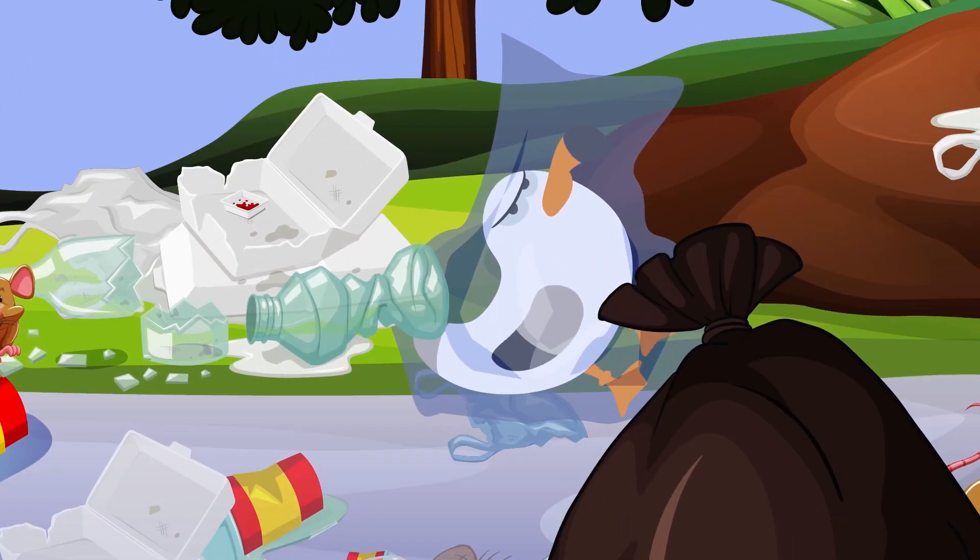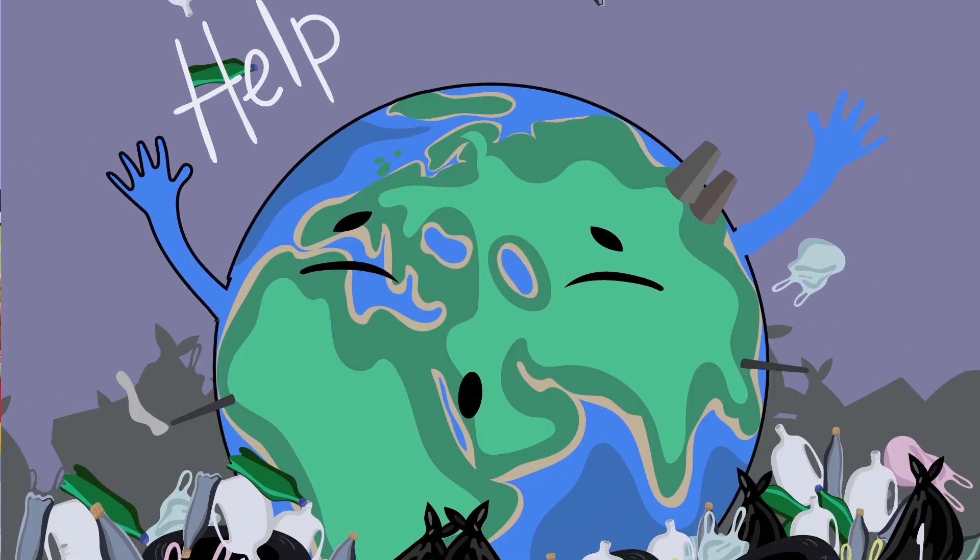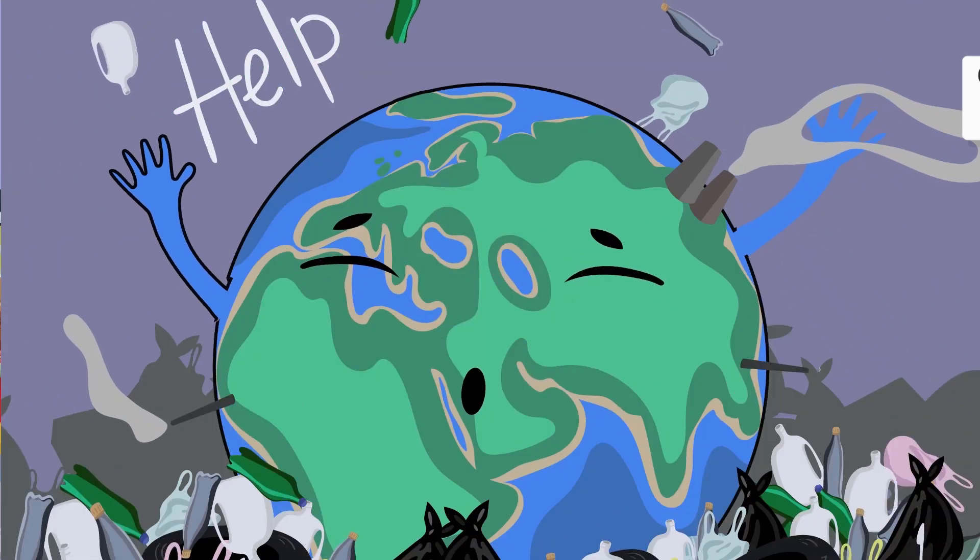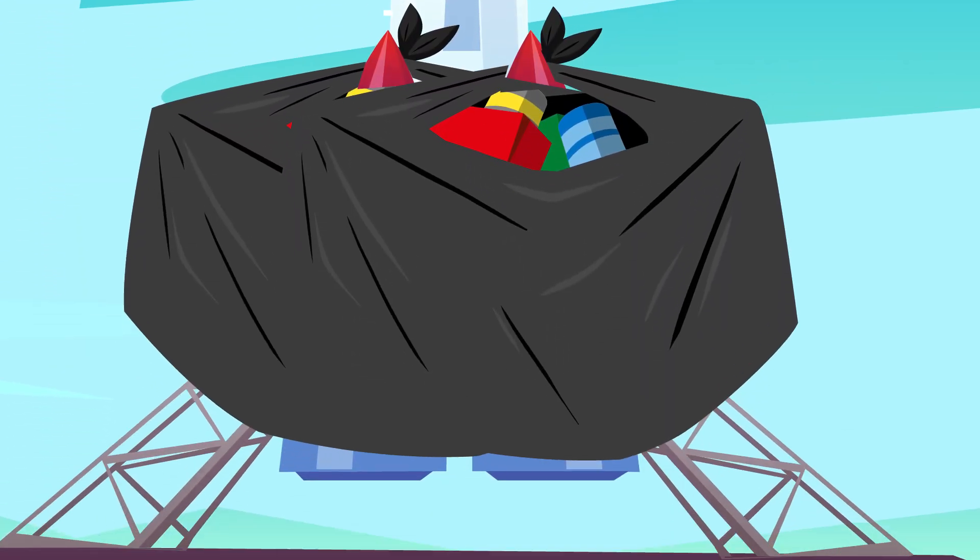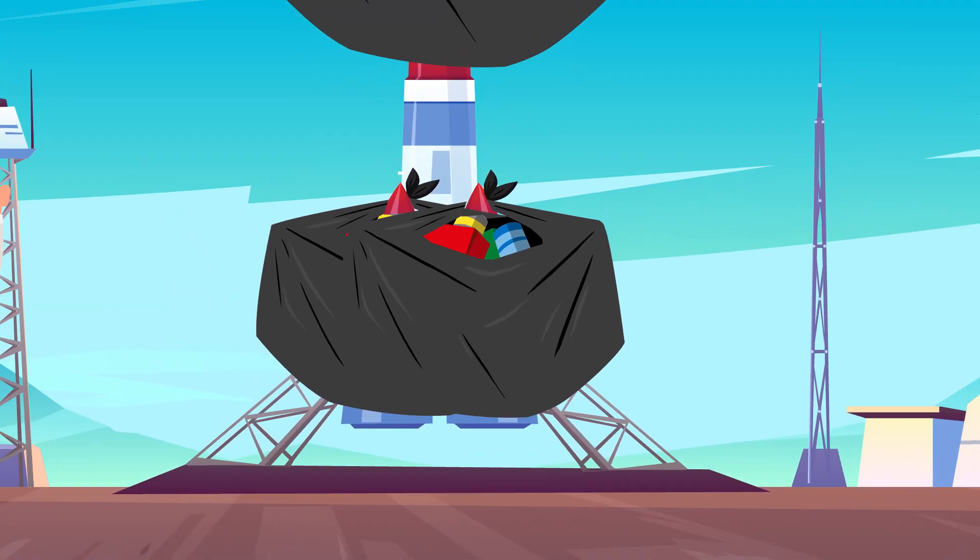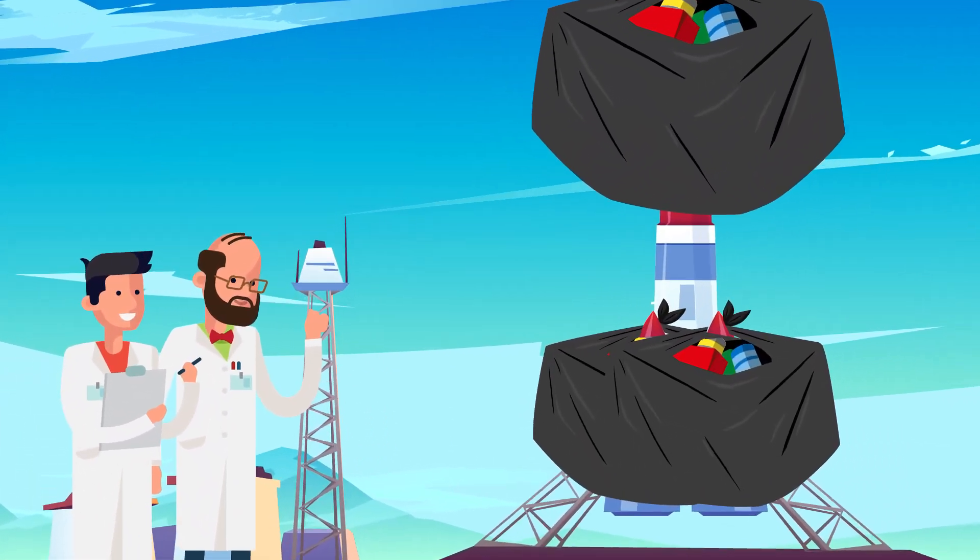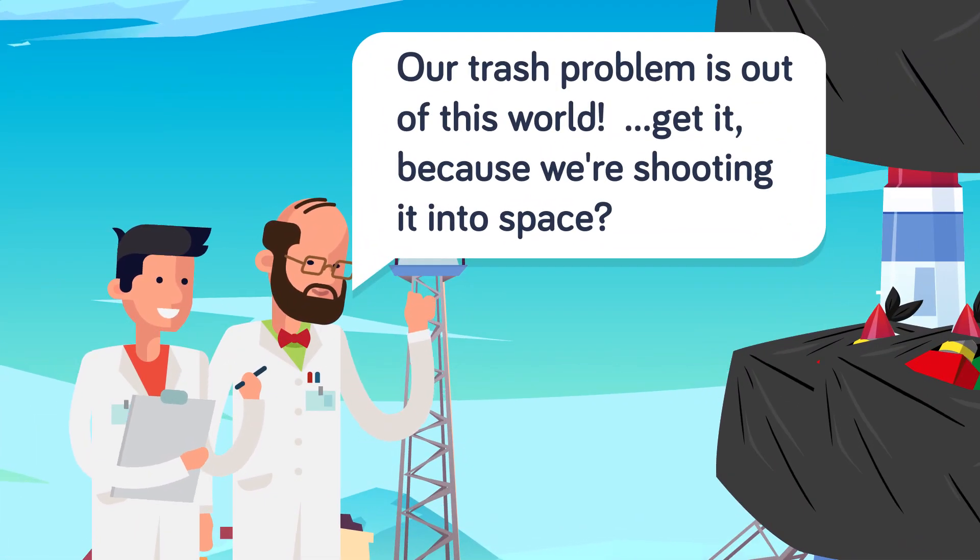Even with an increasing number of people recycling and using alternative methods of disposal, our trash problem is a big one, a global output of around 2.6 trillion pounds per year. So why can't we just get rid of it altogether by launching it into the sun? After all, we're crowded enough as it is here, and there's a whole lot of emptiness in space.